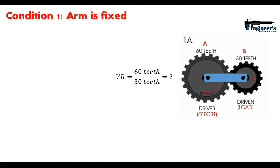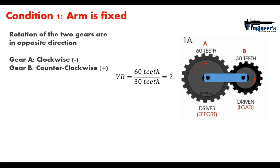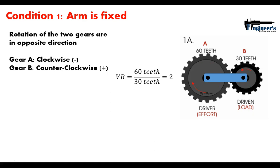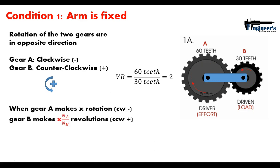With the arm fixed, the two gears rotate in opposite directions. The general sign convention for epicyclical gears is that clockwise rotation is negative and counterclockwise rotation is positive. So if gear A rotates clockwise (negative direction), gear B rotates counterclockwise (positive direction). When gear A makes x clockwise rotations, gear B makes a proportional number of counterclockwise rotations based on the velocity ratio.